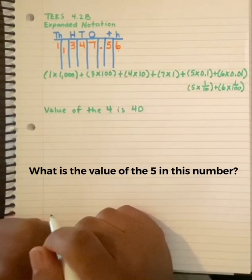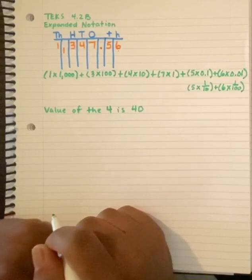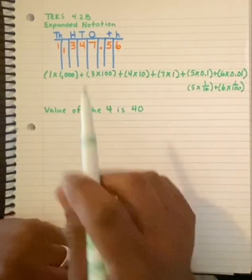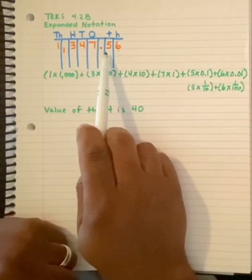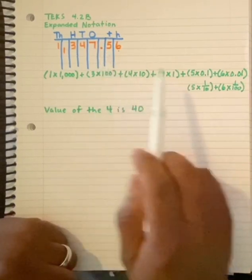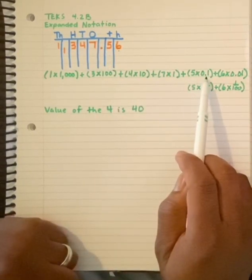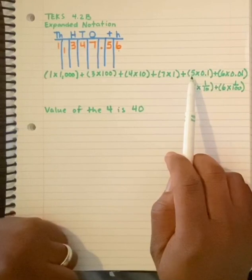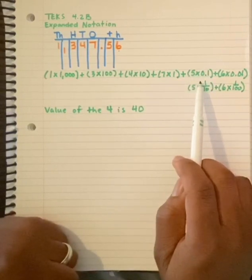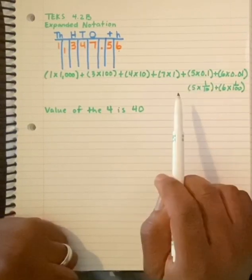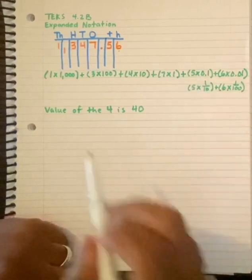What would be the value of the five in this number? Well, my five is here in the tenths place. And it's also here. Think about it. Five dimes. Five tenths.